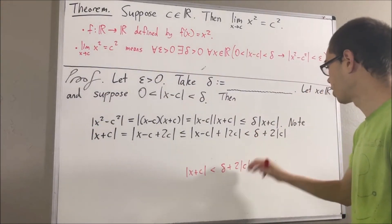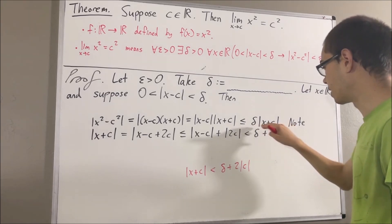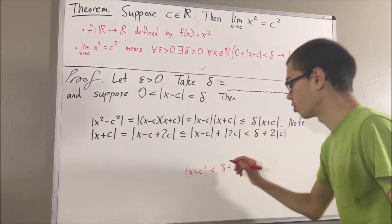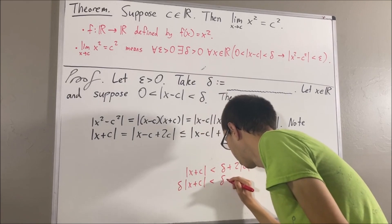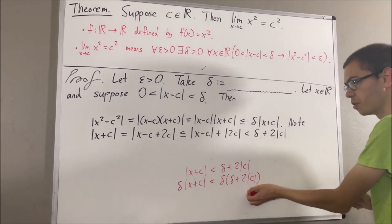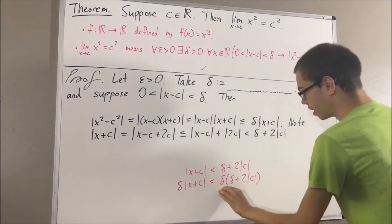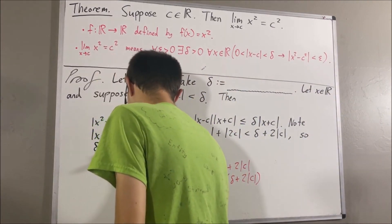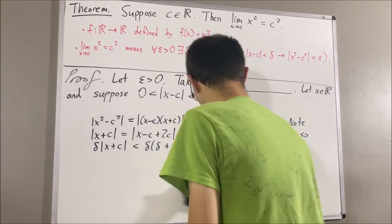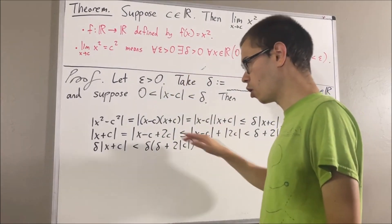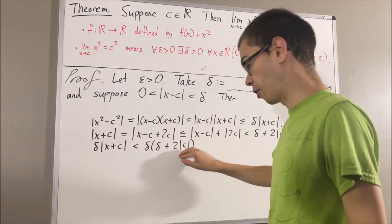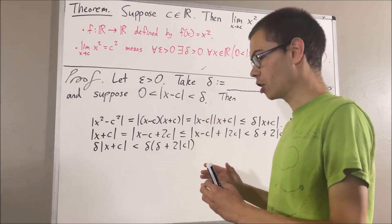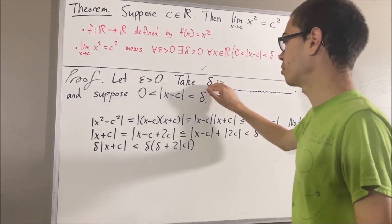Going back to what we have, if we multiply delta on both sides of this inequality — since delta is greater than zero — we get that our expression is less than delta times delta plus 2 absolute value of c. So as you can see, we started with absolute value of x squared minus c squared and have arrived at delta times delta plus 2 absolute value of c, with no more x's remaining. So maybe at this point we should try to figure out what we should define delta to be.